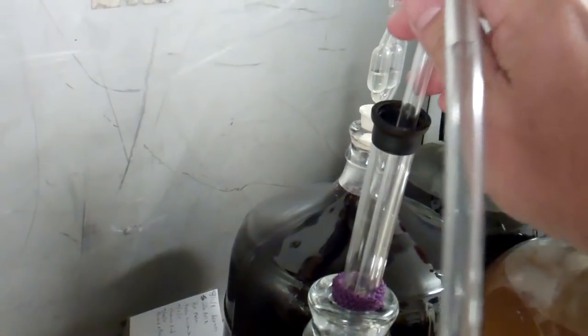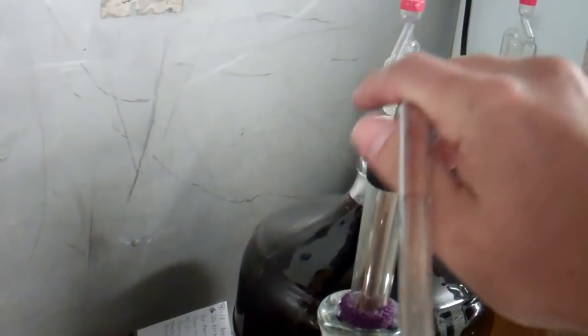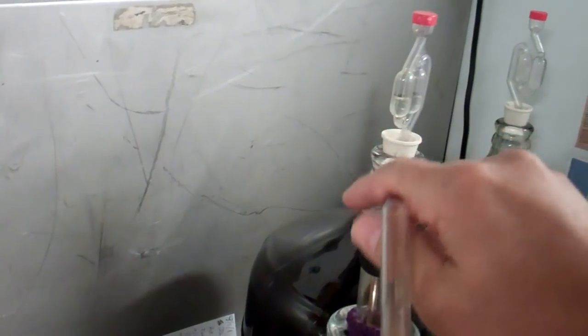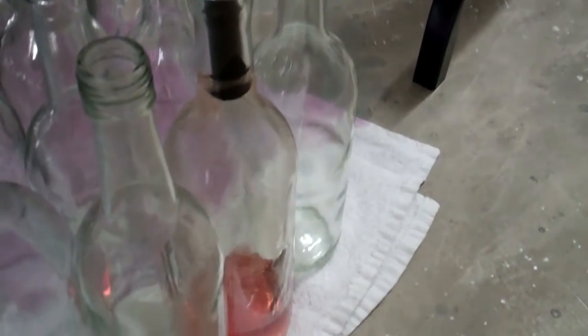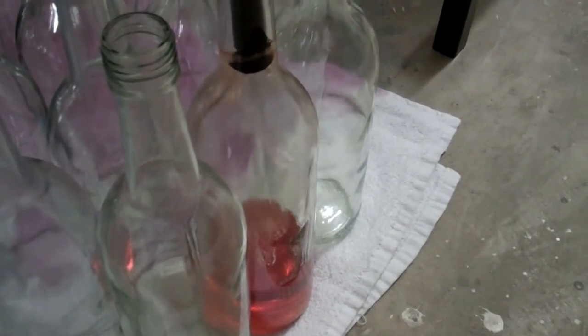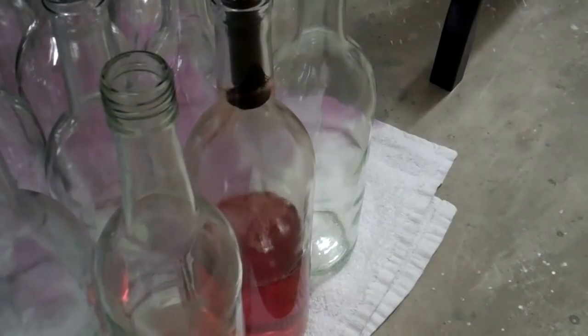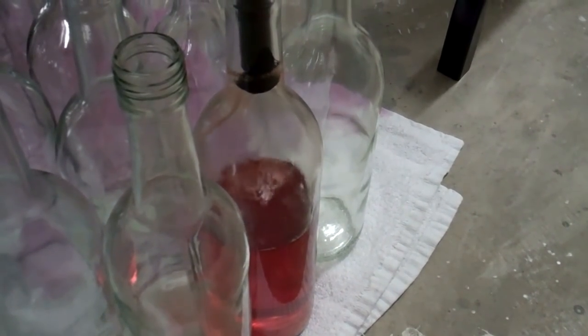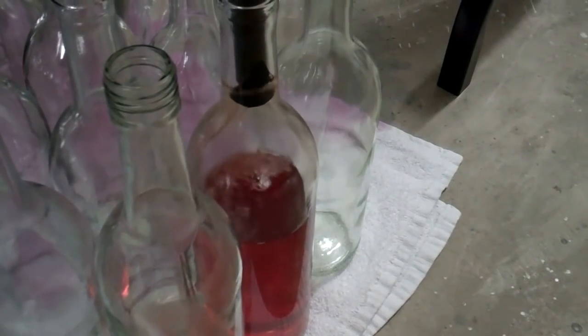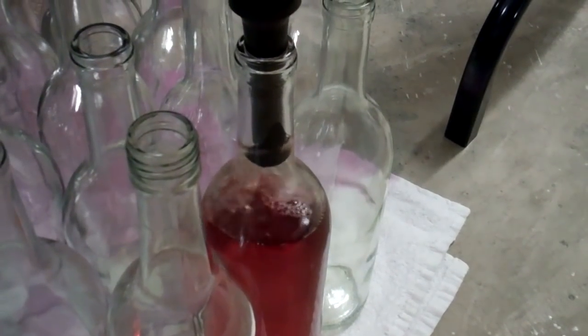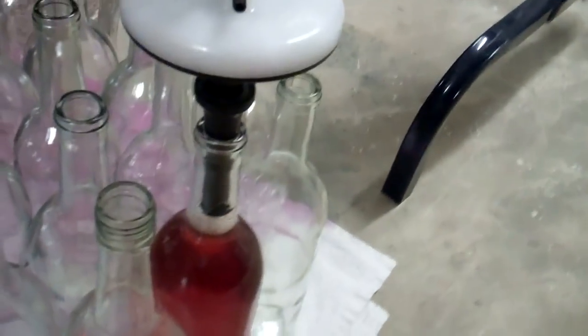So we're going to get this baby primed. There we go. As you can see the wine is coming down and we're filling our first bottle. And then as soon as it reaches the base of that filler it should automatically click off.